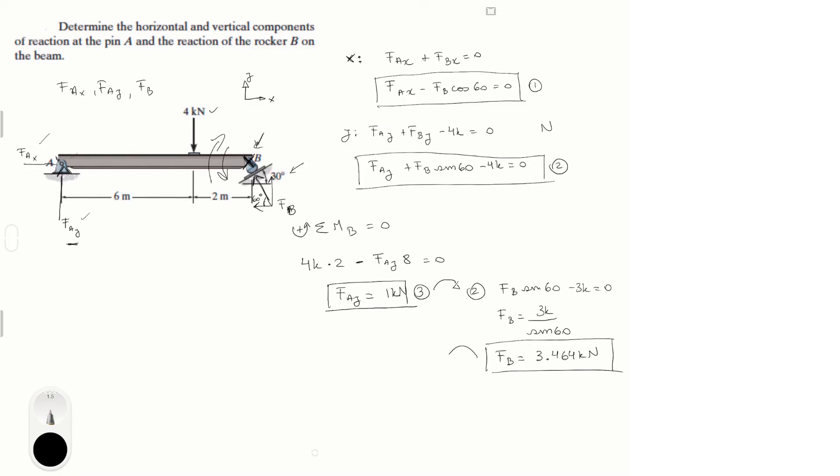And then you plug this into equation 1, and you get F of A of X is equal to 3.464 times the cosine of 60. And you get that this is equal to 1.732 kilonewtons.